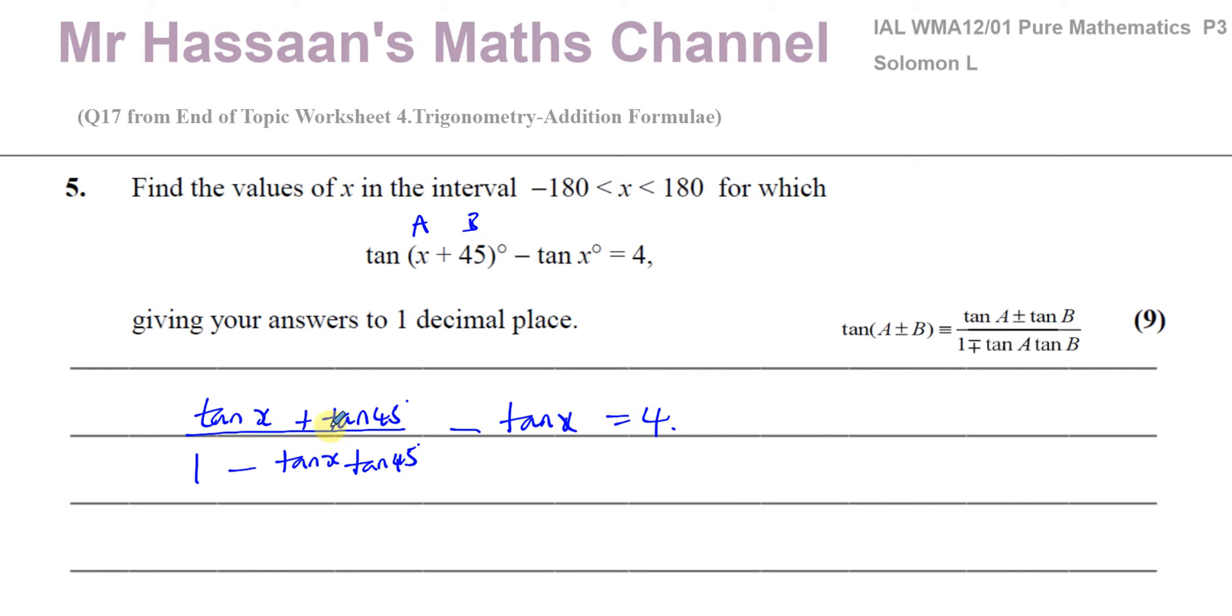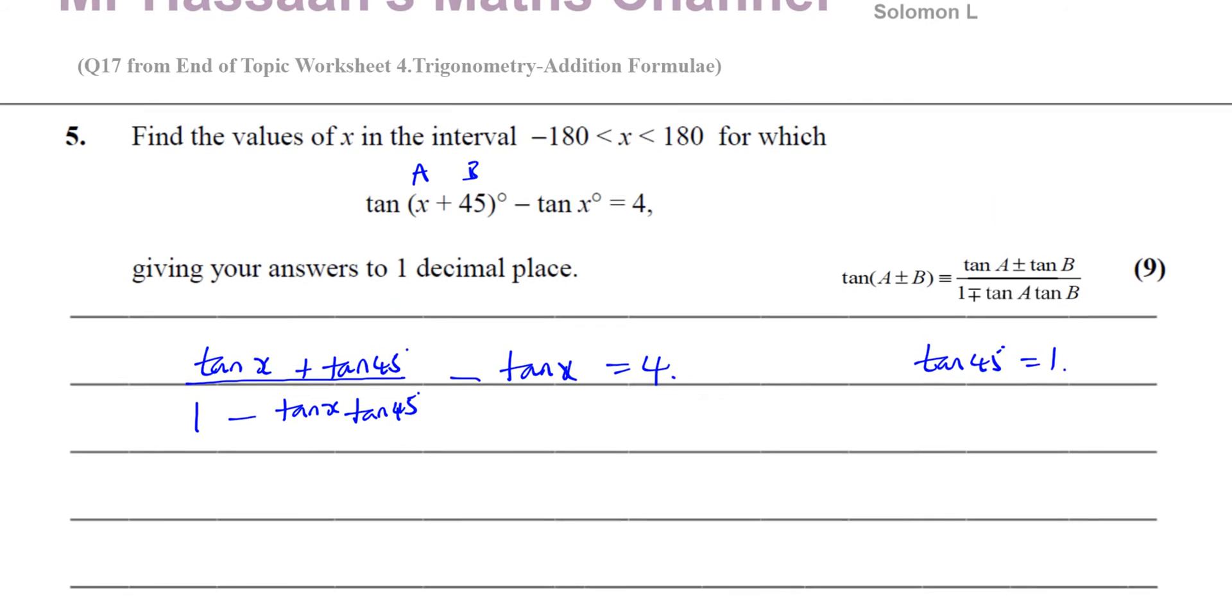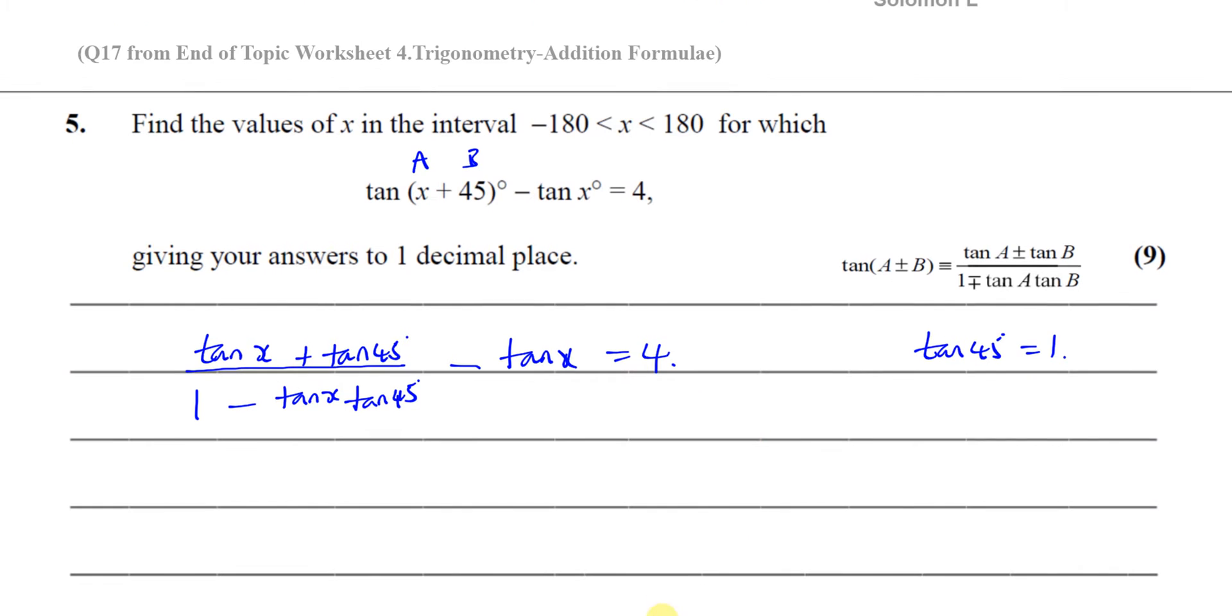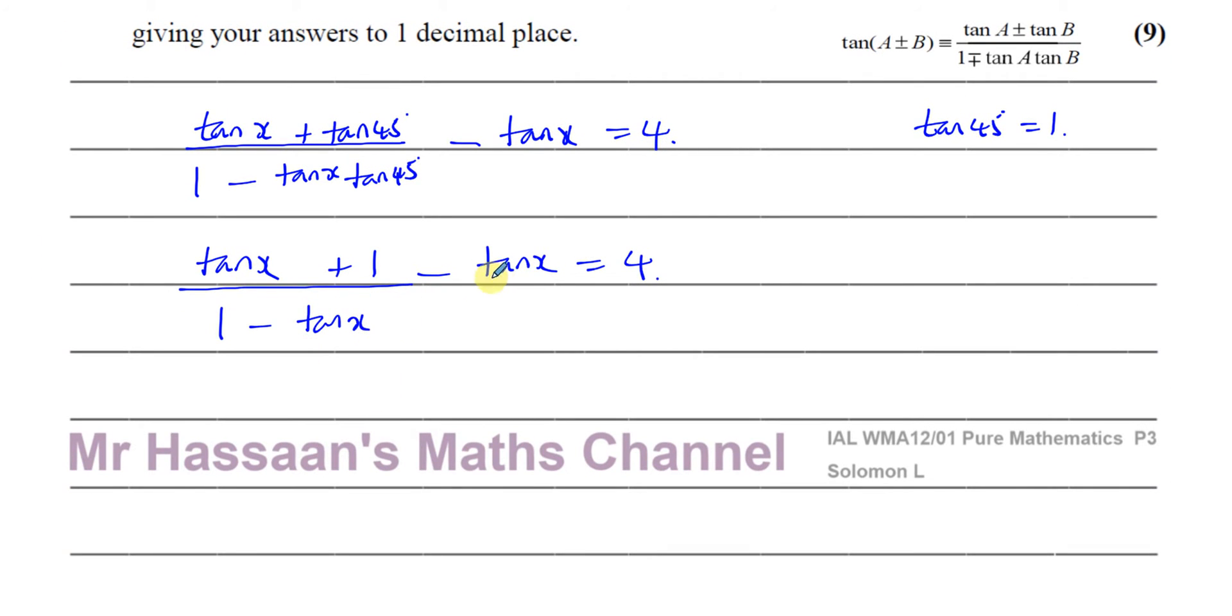Now I know that tan of 45 degrees is equal to 1. You can verify that with your calculator if you're not sure. So I can replace the tan 45s with 1s. So I have tan X plus 1 over 1 minus tan X times 1, which is tan X, minus tan X equals 4. So now I have got everything written in terms of a single angle, tan X. I don't have the compound angle anymore, and now I can carry on and try to solve this.